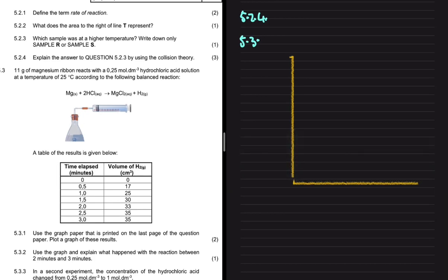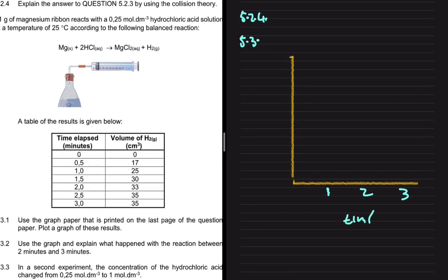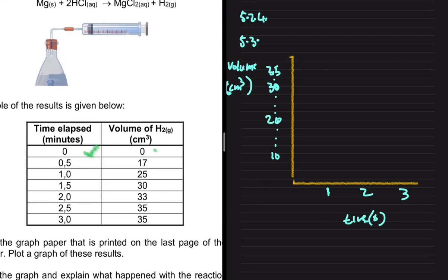On the x-axis we have time in minutes, with an interval of one. On the y-axis we have the volume in centimetre cubed, ranging from 0 to 35. We'll use an interval of 10, so we mark 10, 20, 30, and then 35 partway up.